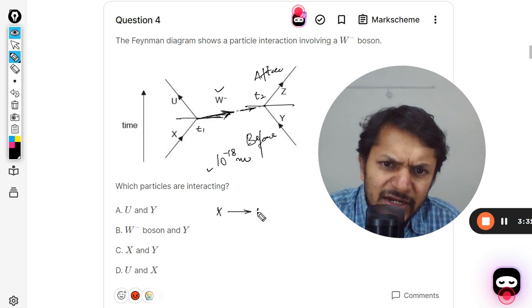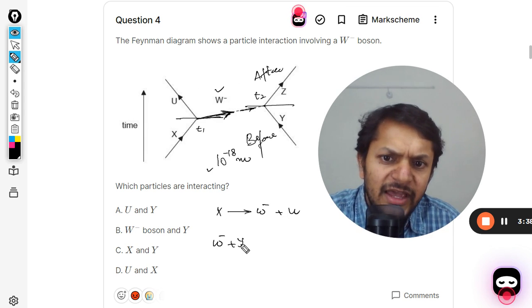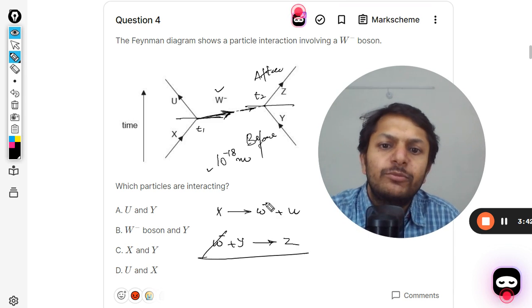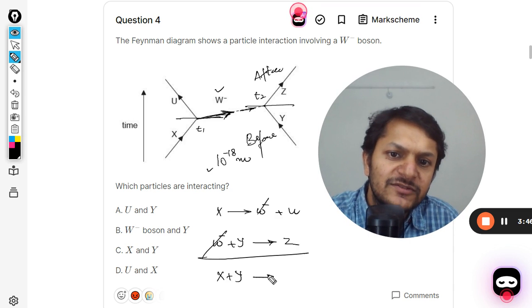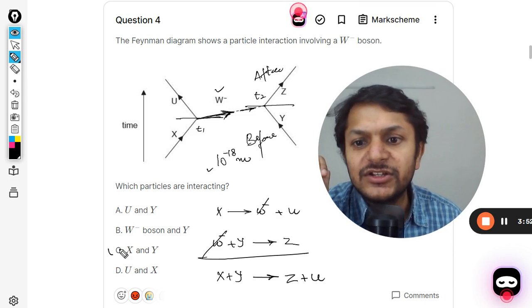Overall the reaction can be written as: X is converted into W minus plus U. The second is W minus plus Y is giving us Z. Overall I can add these two and W minus can be eliminated from the reaction. I can just say that X plus Y is equal to Z plus U. Clearly which particles are interacting with each other? X and Y.